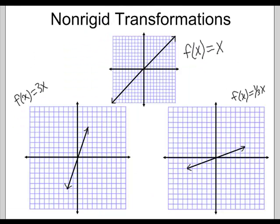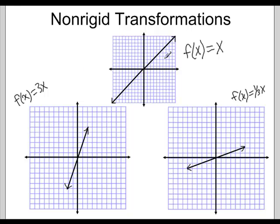But for non-rigid transformations, we're going to take our function and multiply the x by a constant. Here we have f(x) = x, and it's just a straight regular line. That's one of our parent functions right there.